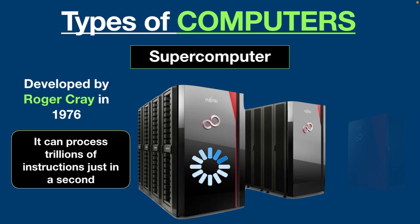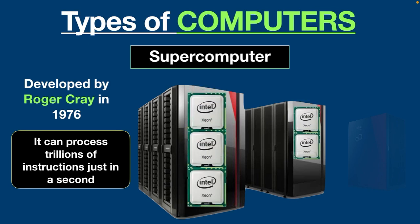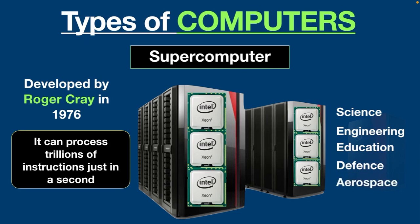The supercomputer is designed to process a massive amount of data — for example, it can process trillions of instructions or calculations in just one second, because it has thousands of interconnected processors. Supercomputers are found in areas like science, engineering, education, defense, and aerospace, and are used for complex tasks such as weather forecasting, scientific simulation, and online stock trading.